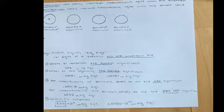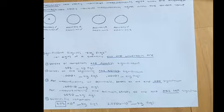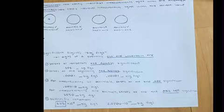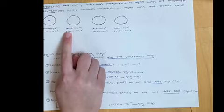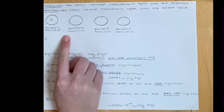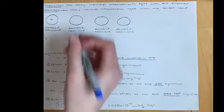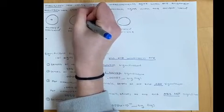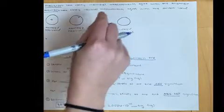If we had measurements with low accuracy but high precision, this would mean that the measurements aren't really near the correct value, but they are closely clustered together — so not near the center, but all grouped together.